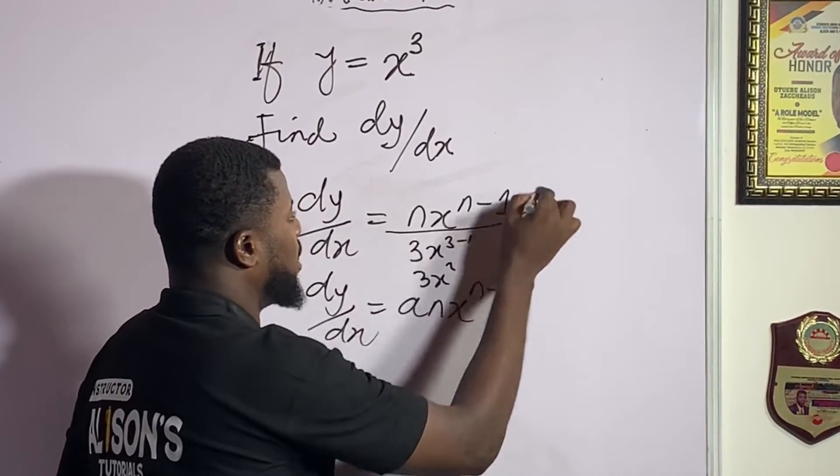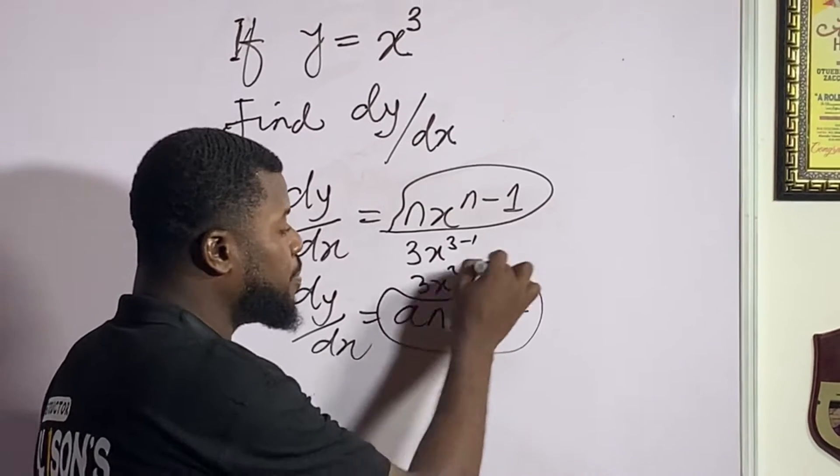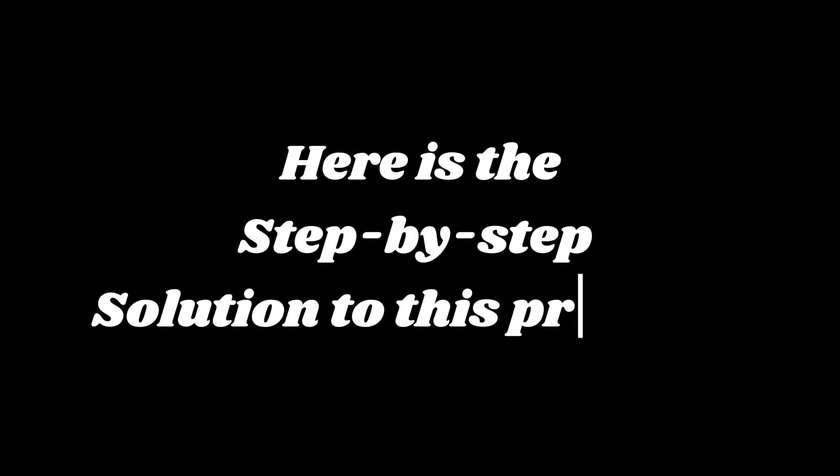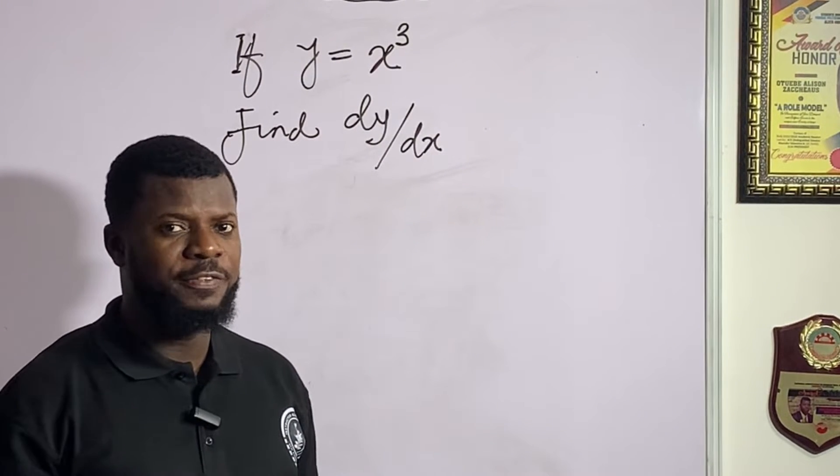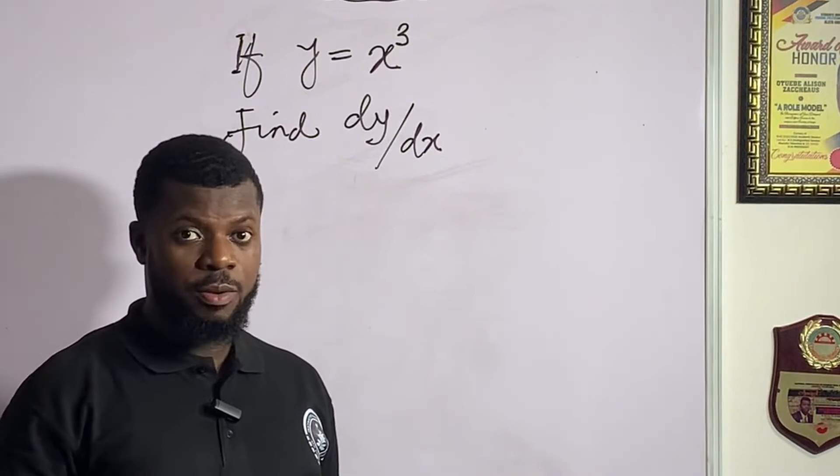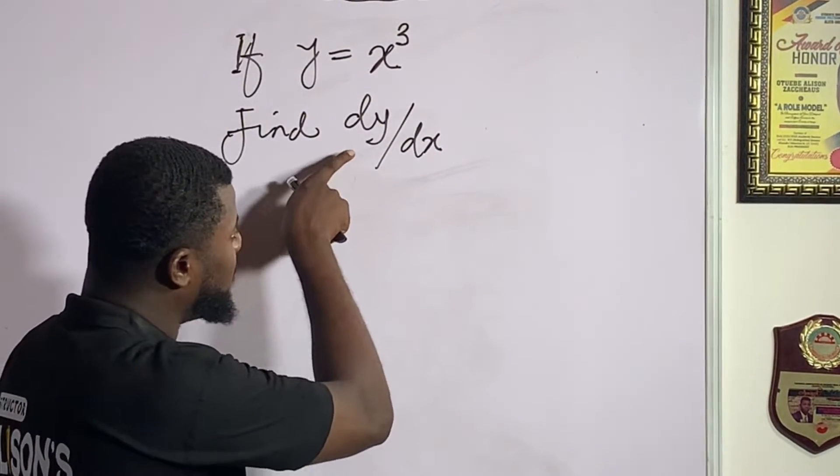So you just need to remember this formula. If you remember this formula, it can be able to solve any problem on differentiation. Hi smart people, this may look somehow difficult but trust me I'm going to explain it and break it down. It's going to be very, very simple. So we want to look for the derivative of y with respect to x of this function y equal to x cubed.